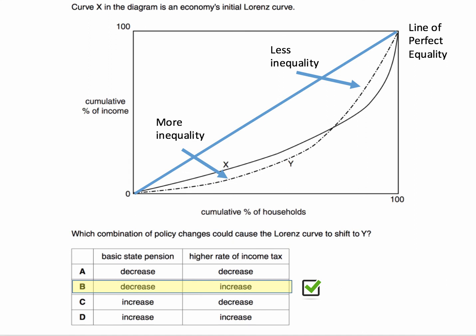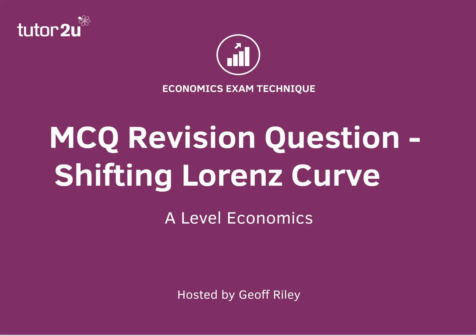So a fall in the basic state pension would worsen inequality at the bottom end of the income distribution. An increase in the higher rate of income tax would improve or reduce income inequality at the top end. So that's why the answer to this question is B.